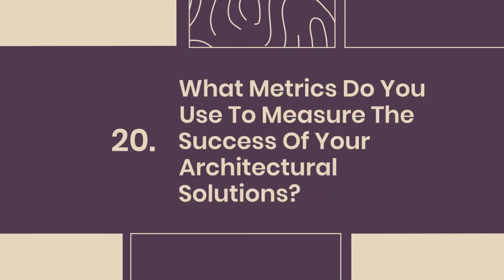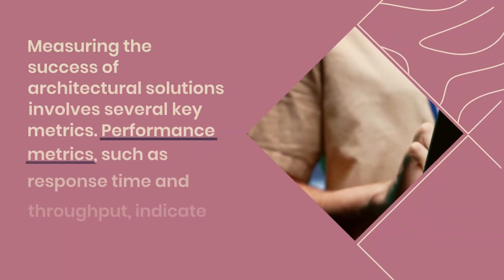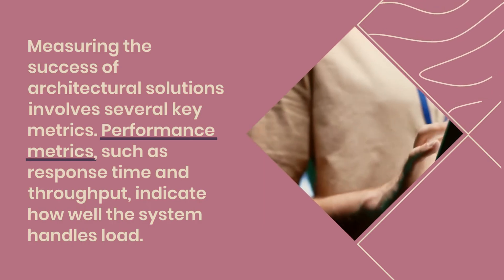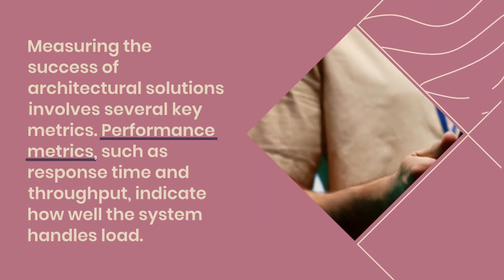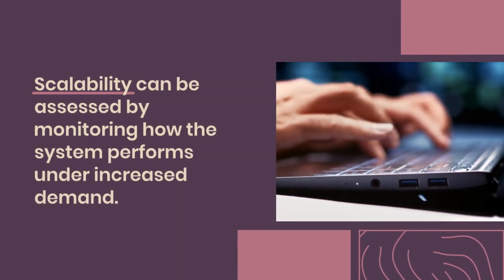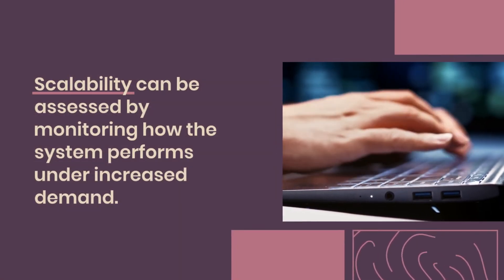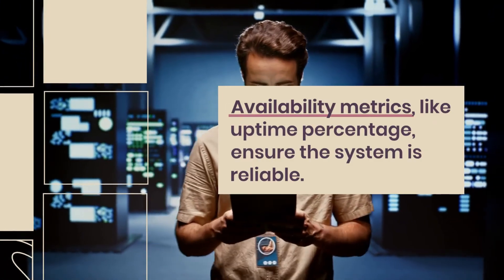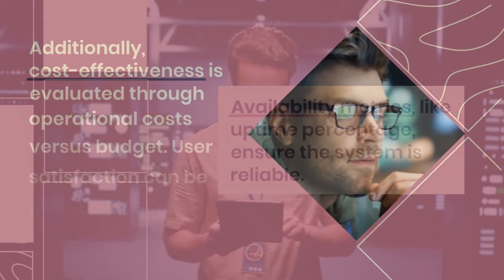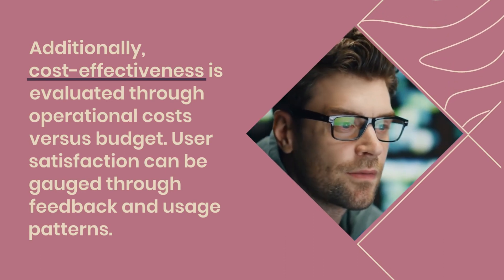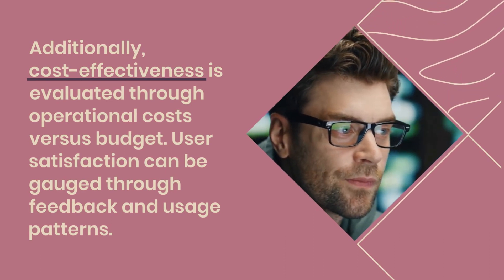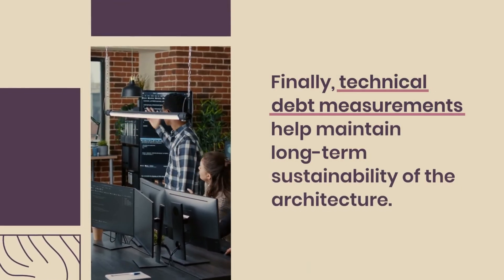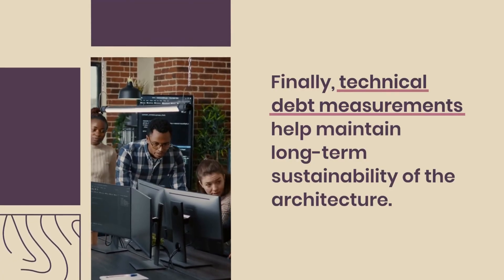Question 20: What metrics do you use to measure the success of your architectural solutions? Measuring the success of architectural solutions involves several key metrics. Performance metrics, such as response time and throughput, indicate how well the system handles load. Scalability can be assessed by monitoring how the system performs under increased demand. Availability metrics, like uptime percentage, ensure the system is reliable. Additionally, cost-effectiveness is evaluated through operational costs versus budget. User satisfaction can be gauged through feedback and usage patterns. Finally, technical debt measurements help maintain long-term sustainability of the architecture.